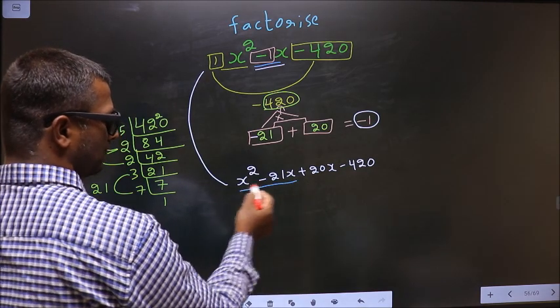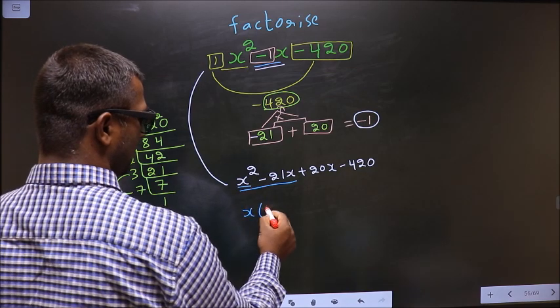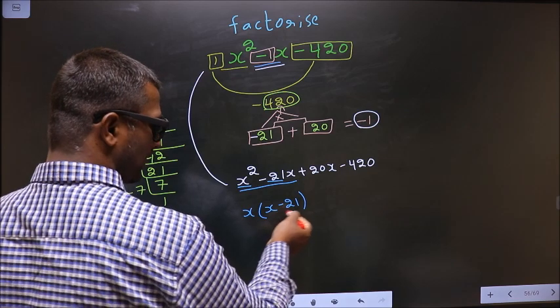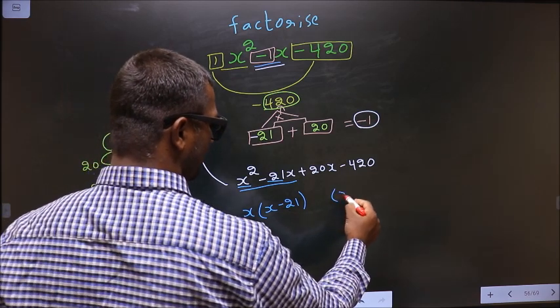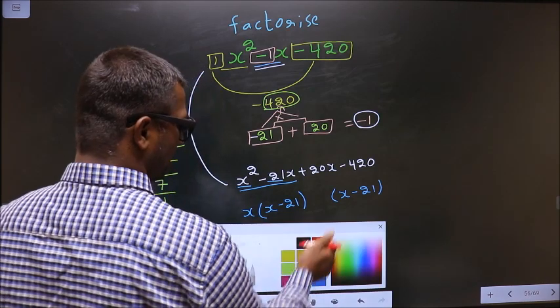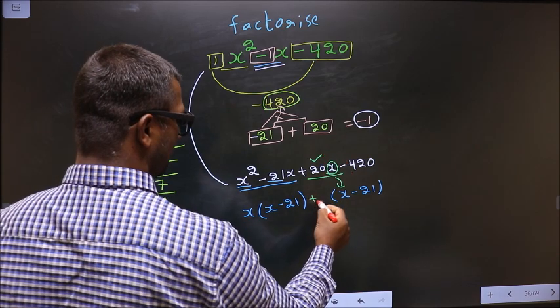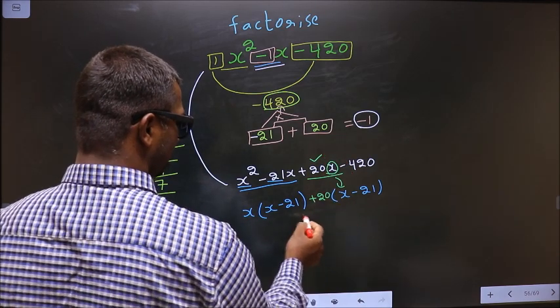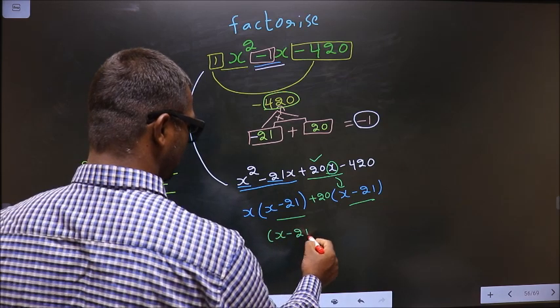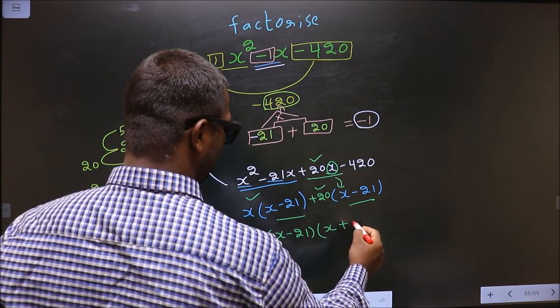What can be taken common from these two terms is x. So here I get x and here I get -21. Whatever I have got here, here also I should get the same thing. Now from this x has gone inside, so outside you are left with +20. Now you take out x - 21 common. So here you have x and here you have +20.